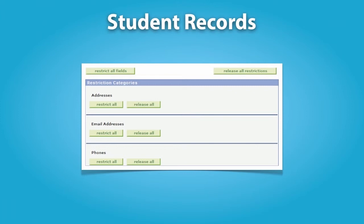However, schools must tell parents and eligible students about directory information, and allow parents and eligible students a reasonable amount of time to request that the school not disclose directory information about them. This opt-out option, however, does not apply to military recruiters or to the Pentagon. Thus, a school must disclose directory information to representatives from these agencies. In addition, some records maintained by schools are exempt from FERPA, including records in the sole possession of school officials and records maintained by a law enforcement unit of the educational institution.